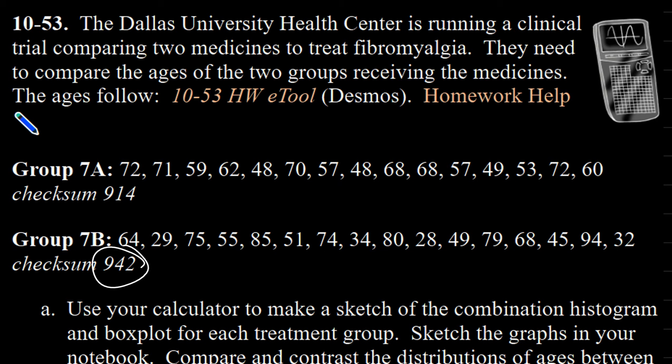Hey class, question 53 says the Dallas University Health Center is running a clinical trial comparing two medications to treat fibromyalgia. They need to compare the ages of the two groups receiving the medications. We have students in group 7A and 7B, and I did go ahead and pre-enter those values in my calculator so they're already here.